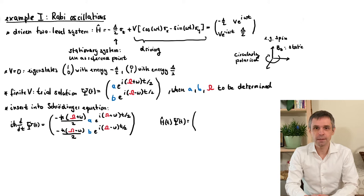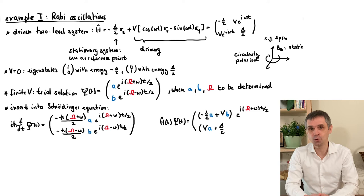And acting on the trial solution with Hamiltonian isn't any more complicated, because it is just a 2x2 matrix. What is notable here is that in this matrix multiplication, the different exponential factors conspire so that the result still has the same time dependence in the two components as the trial solution itself.